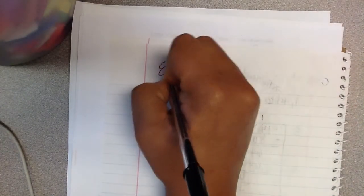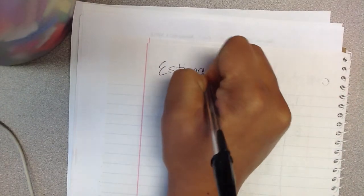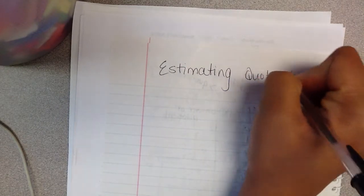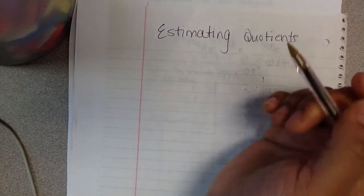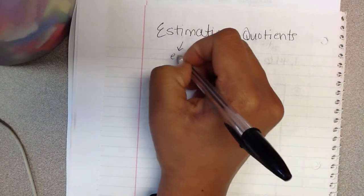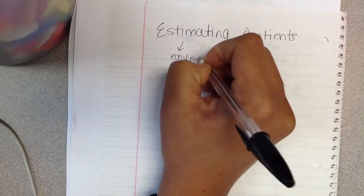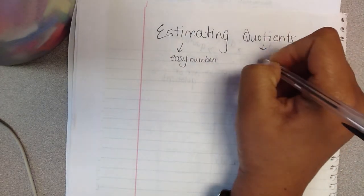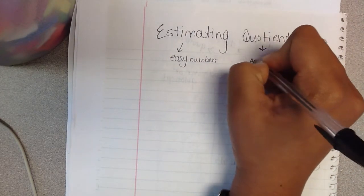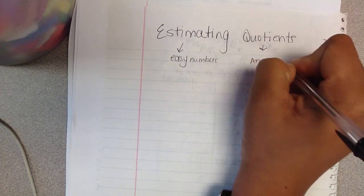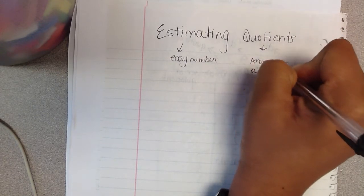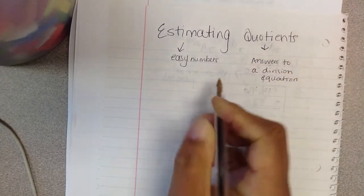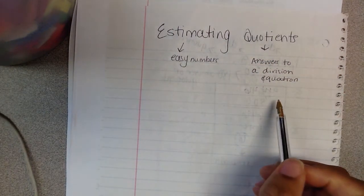At the top, I'm going to write estimating quotients. And so we have two math words here. Estimating, we know, means easy numbers. And quotients, we know, means answers to a division equation.